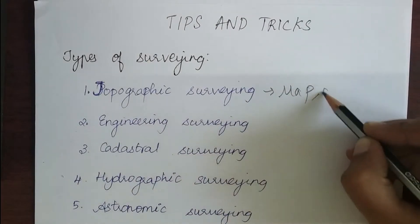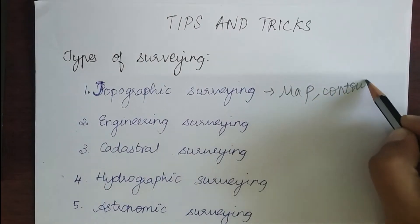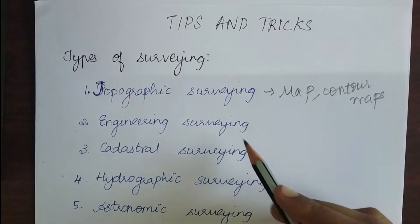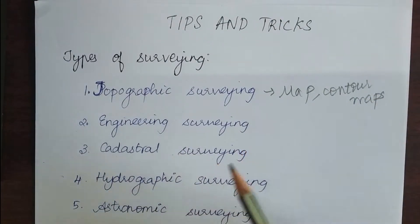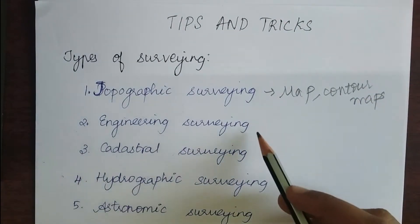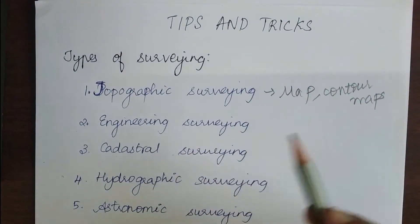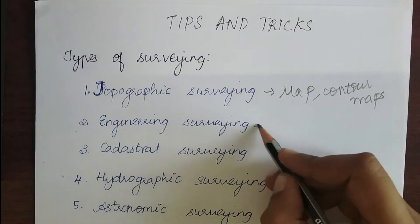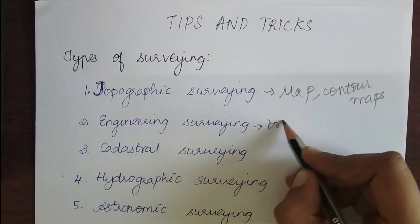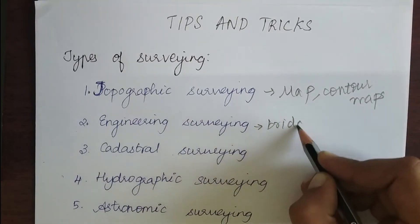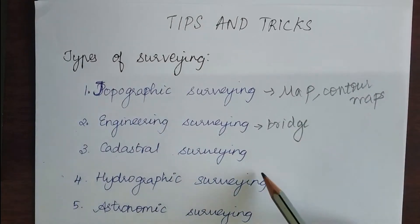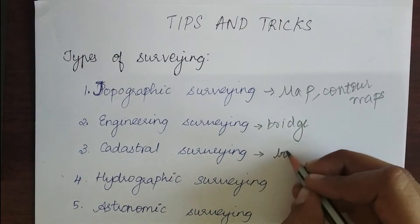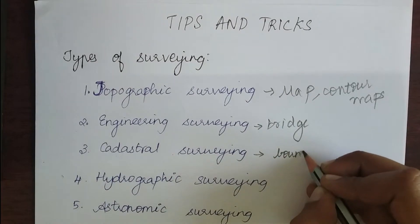Engineering survey is done before starting any project to build a structure. The structure may be a bridge or any type of building. Next is cadastral survey. This is used to determine the boundary of a property.